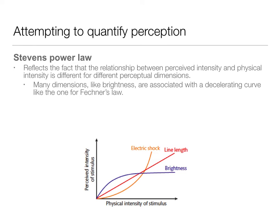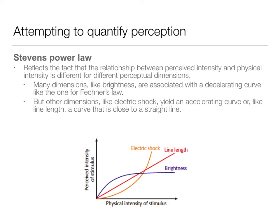Many dimensions, like brightness, are associated with that decelerating curve we see in the blue line here, like we see in Fechner's Law. So some of Fechner was right, but the problem was that Fechner's Law wasn't right across the board for all different modes of perception. Electric shock yields an accelerating curve, and line length is really a one-to-one kind of relationship. This was the next attempt to work on this, and Stevens was working on it in the early 1900s.